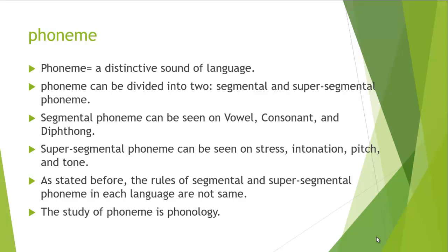Phoneme is divided into two types: segmental and super segmental phoneme. Segmental refers to speech sounds that can be segmented or divided during production — they can be broken down. These are known as vowels, consonants, and diphthongs. When they become phonemes — vowel phonemes or consonant phonemes — these sounds carry meaning in the language. The meaning can be the same or different depending on the language in question.